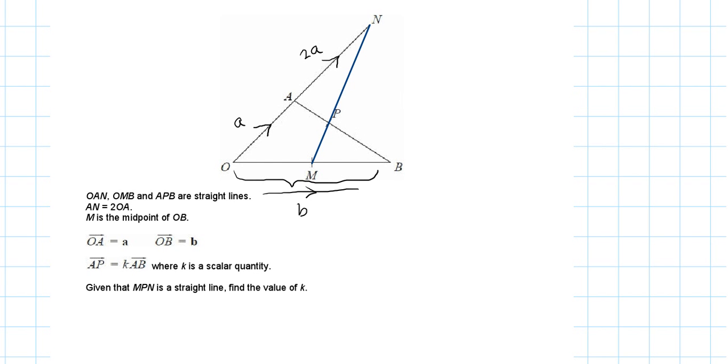The first thing I'm going to do is find the vector AB. To find vector AB, that's going to be AO plus OB. AO is minus A because it's going in the opposite direction of OA, and OB is B. This can also be written as B minus A.